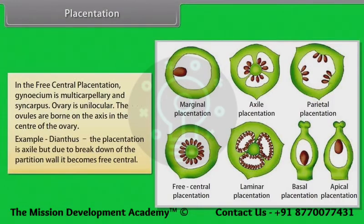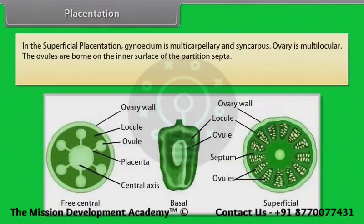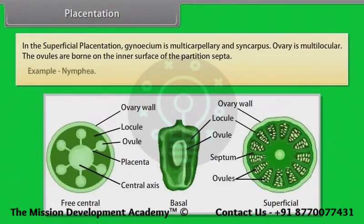In free central placentation, the gynoecium is multicarpellary and syncarpous. The ovary is unilocular. The ovules are borne on the axis in the center of the ovary. Example: Dianthus. The placentation is axile, but due to breakdown of the partition wall it becomes free central. In superficial placentation, the gynoecium is multicarpellary and syncarpous, the ovary is multilocular, and ovules are borne on the inner surface of the partition walls. Example: Nymphaea.